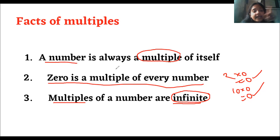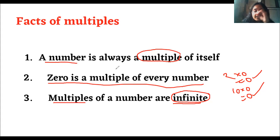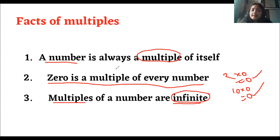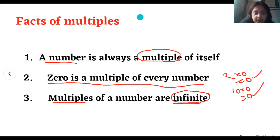Rule number one: a number is always a multiple of itself. Zero is a multiple of every number. Multiples are infinite — we can make one number as big as we want by multiplying it. So this is it about today's video. Please pause this video here and write down these three rules in your notebook.